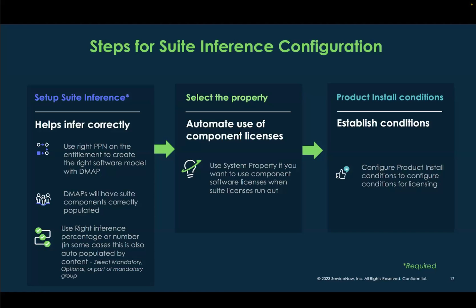There is an important system property that is part of the feature which helps you use off-component licenses. This means that if you have a license for a suite and also a license for an individual product — for example, a license for CIS Suite and a license for Windows Server — if Windows Server installs are inferred to CIS but the CIS licenses are exhausted, it will move to and consume the Windows Server license using this property.